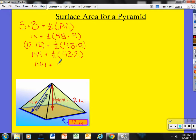2 goes into 4 twice. 2 goes into 3 once with 1 left over. 2 goes into 12 6 times. So now I'm left with 144 plus 216.